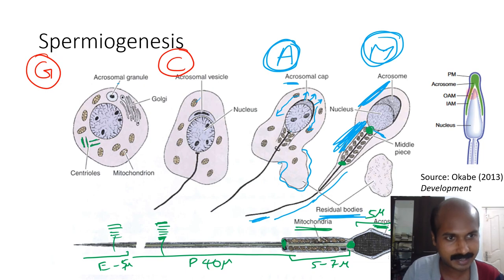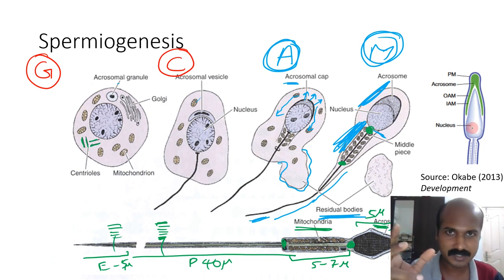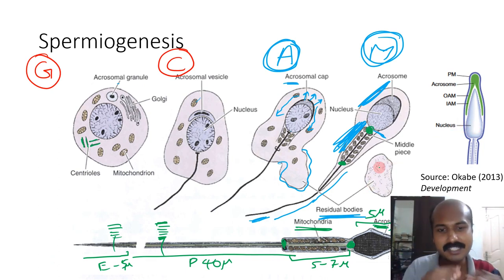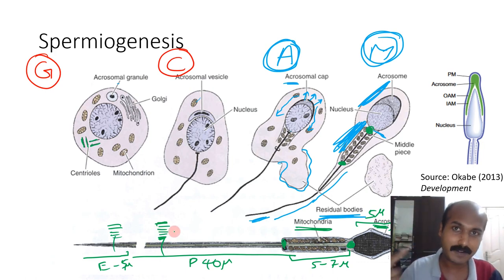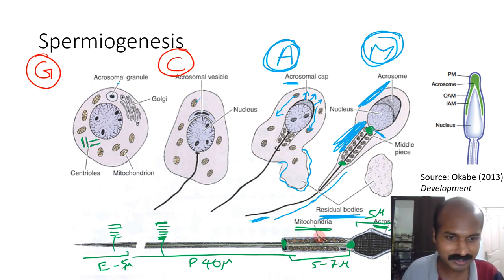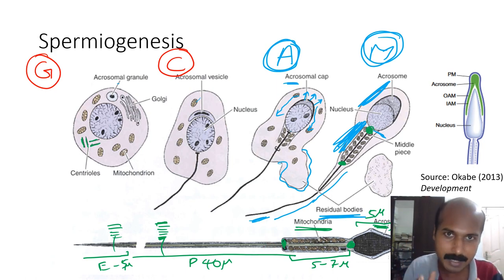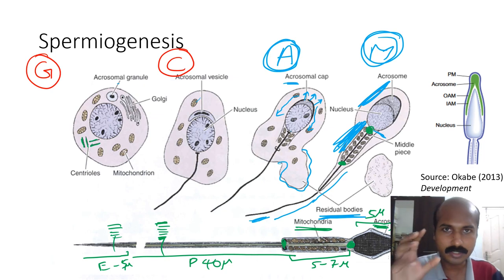The spermatozoon can be thought of as a specialized package: the compacted nucleus carries the male DNA to be delivered into the oocyte cytoplasm, while the flagellum — powered by the axonemal complex and mitochondrial assembly — drives that journey. Essentially, the spermatozoon is a gamete machinery designed to deliver male DNA into the female oocyte to enable fertilization.